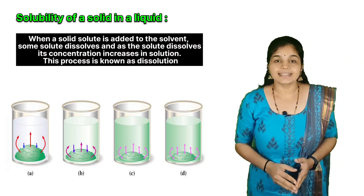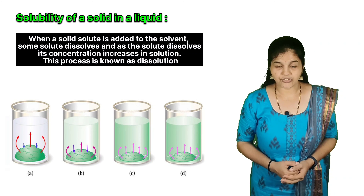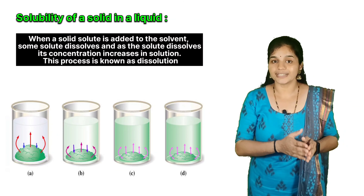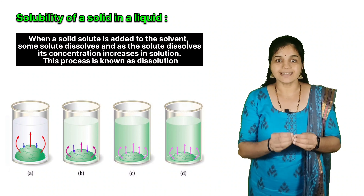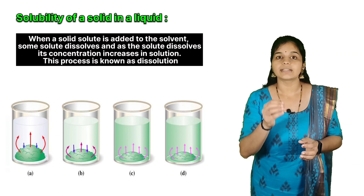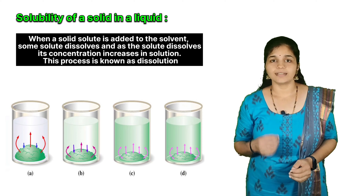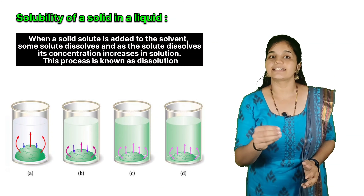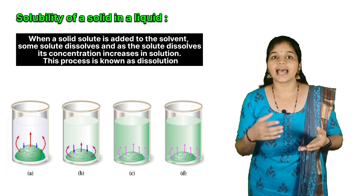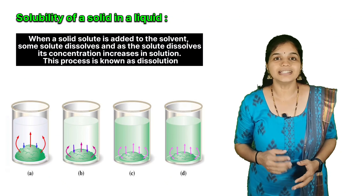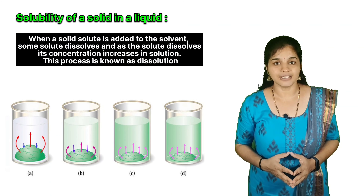After some time, the two processes — dissolution and crystallization — occur at the same rate. At this stage, the number of solute particles going into the solution equals the number separating out, creating a state of dynamic equilibrium. At this equilibrium stage, the concentration of solute in the solution remains constant at a given temperature and pressure. If we add more solute to this solution, it cannot be dissolved at the same temperature and pressure.